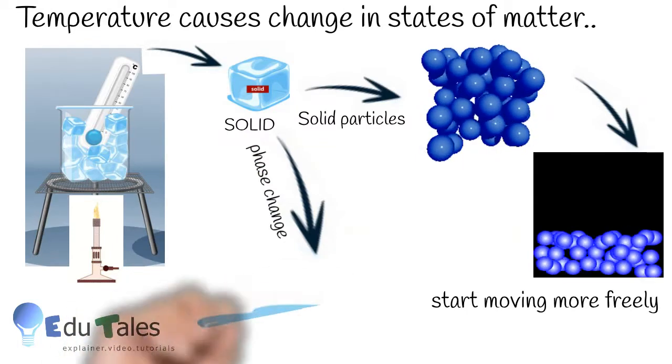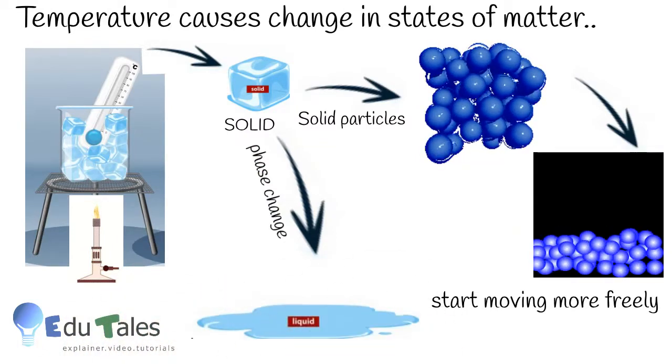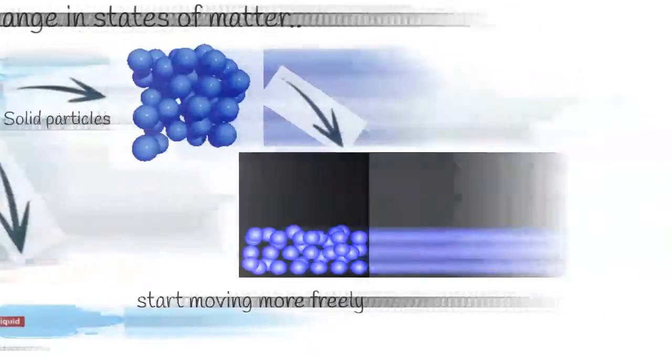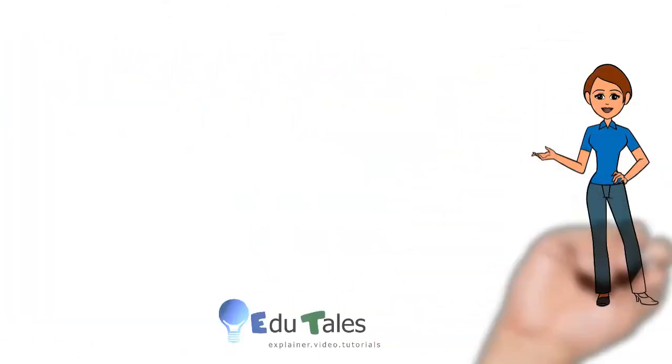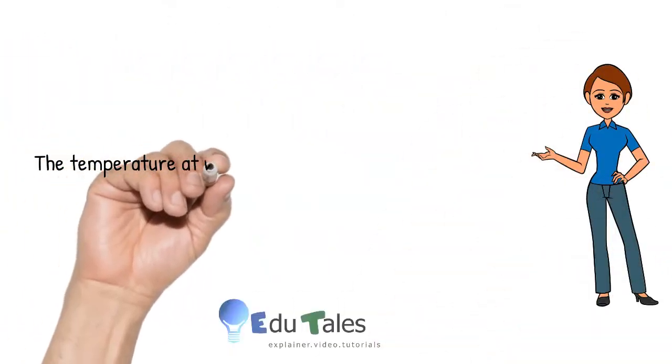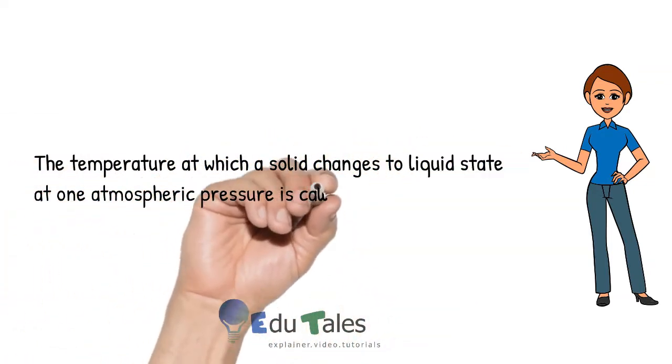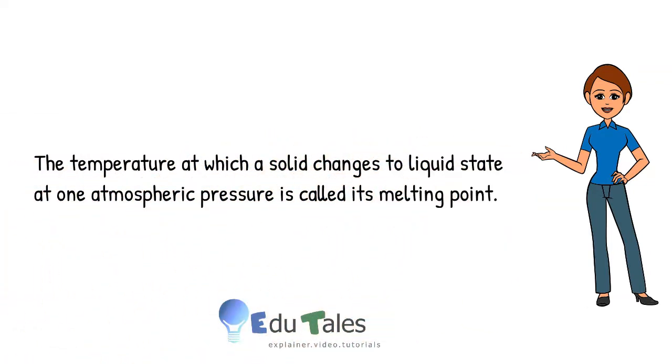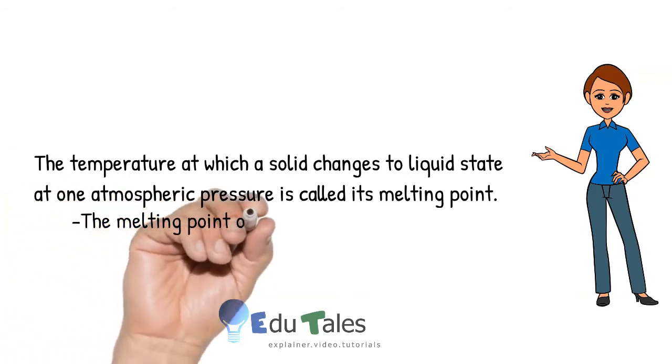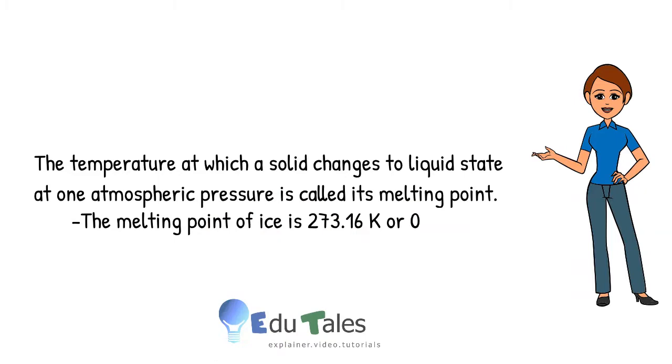Gradually, there is a phase change from solid to liquid. The temperature at which a substance changes from solid into liquid state at one atmospheric pressure is called its melting point. The melting point of ice is 273.16 Kelvin or 0 degree Celsius.